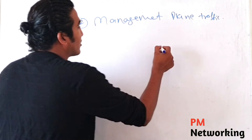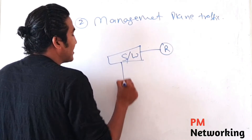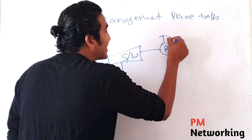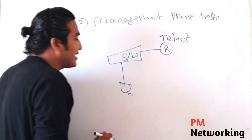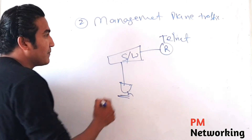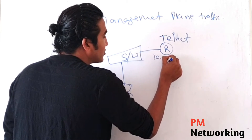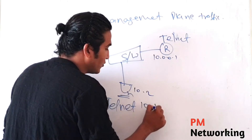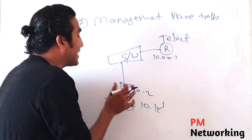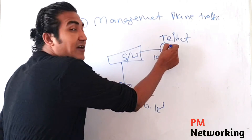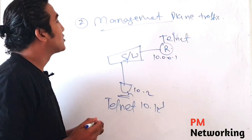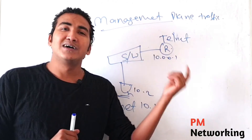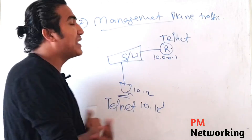Suppose I have a network with one router, one switch, and one computer. I want to configure this router from this PC. What we need to do is configure Telnet on the router. Suppose the IP address of the router interface is 10.0.0.1 and the IP address of the computer is 10.0.0.2. When I run 'telnet 10.0.0.1,' that means a user is generating traffic for a device — so this type of traffic is known as management plane traffic. Management plane traffic is traffic generated by a user for the device.